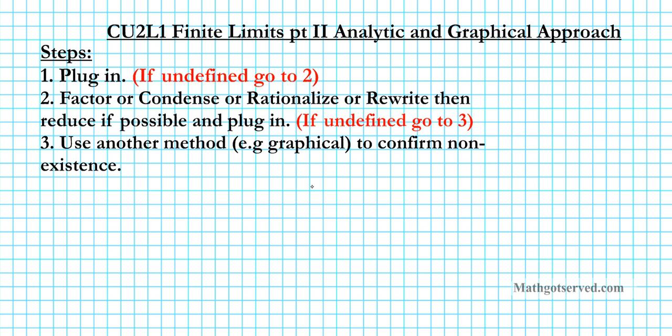If you end up with the fact that the left and right hand limits are different, then you can conclude with certainty that the limit does not exist. The analytic method doesn't explicitly show you that, so it's good to have confirmation using another method before you conclude that the limit does not exist.